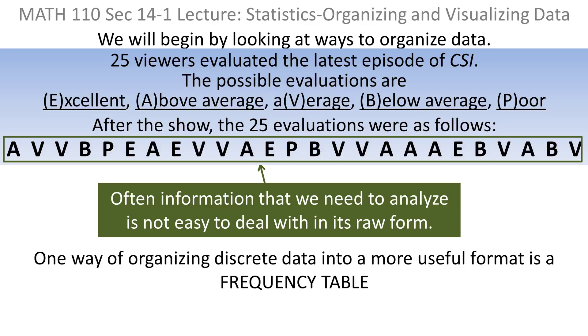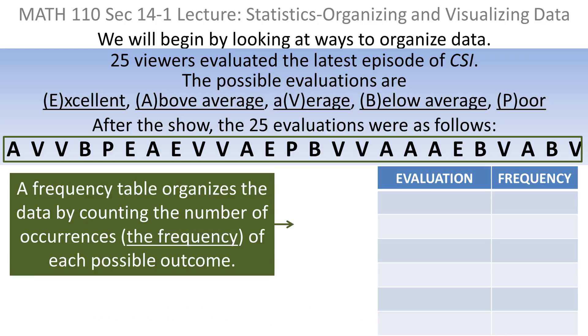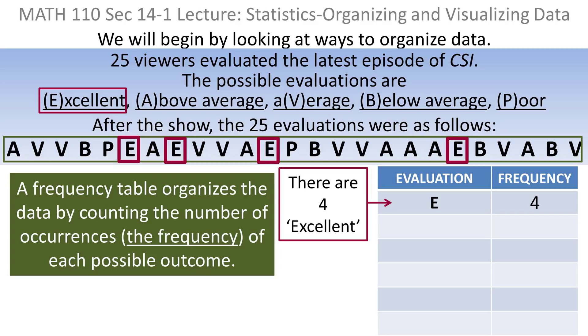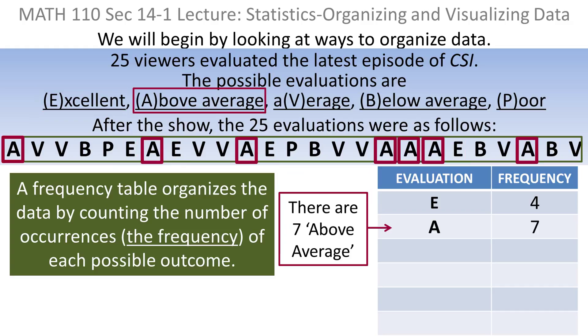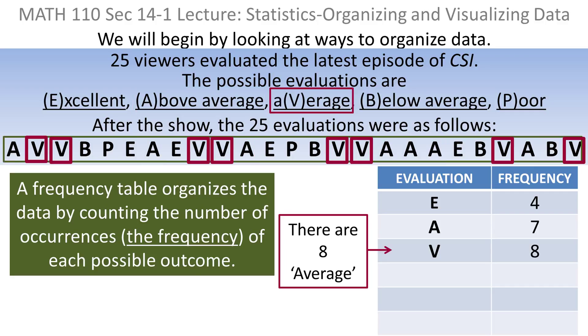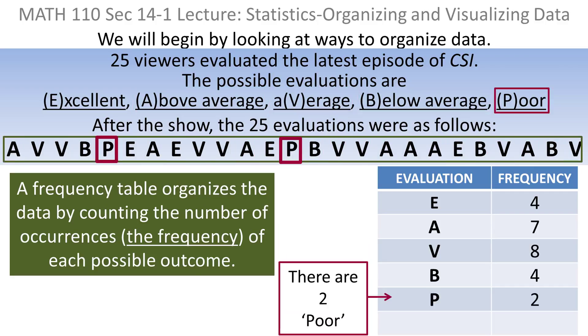One way to organize discrete data into a more useful format is a frequency table. A frequency table just organizes the data by counting the number of occurrences, the frequencies of each possible outcome. If you look at the E's and count them, there are four. If you count the A's, you'll find there are seven. There are eight V's, four B's, and two P's. If you add up all those numbers, you'll see there are 25, corresponding to the number of viewers who evaluated.